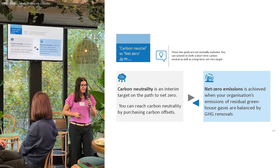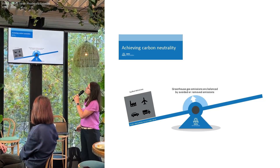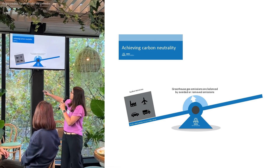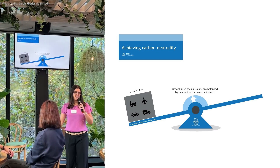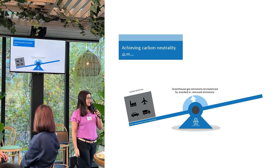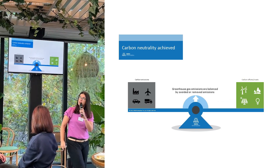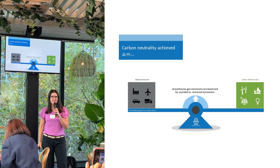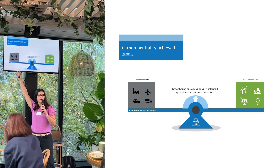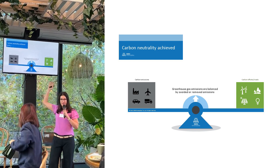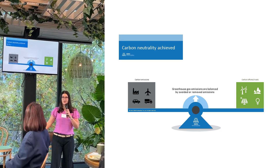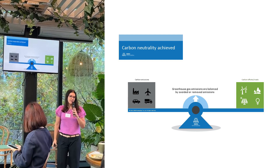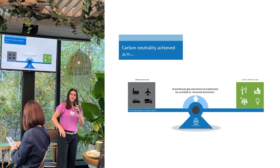I've got it all packaged up in a graphic for you. If you want to achieve carbon neutrality, you have all your emissions here on the left and you're looking to balance the scale by purchasing an equal number of carbon offsets. It doesn't matter how big your carbon emissions are — it's just a matter of balancing. You emit, you purchase carbon offsets, and these could be all sorts of carbon offsets.